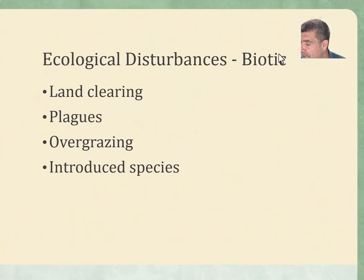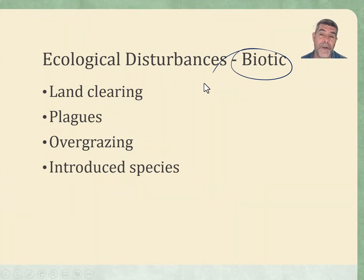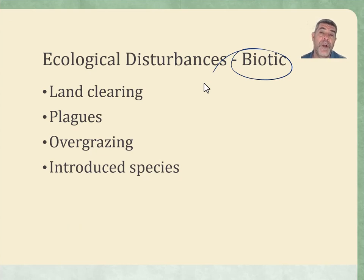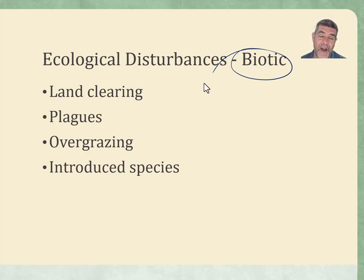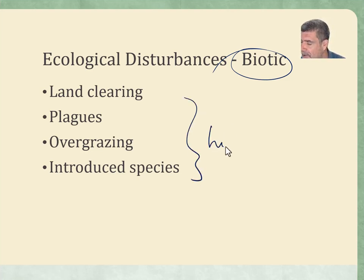We've also tried to focus on the difference between the biotic, or the living components that can impact on ecosystems, and the abiotic or non-living components. Unfortunately, when we're looking at ecological disturbances, a large proportion of the biotic impacts that have been identified in a lot of ecosystems are those that have been created by humans in one form or another.